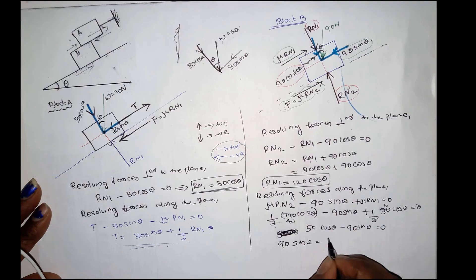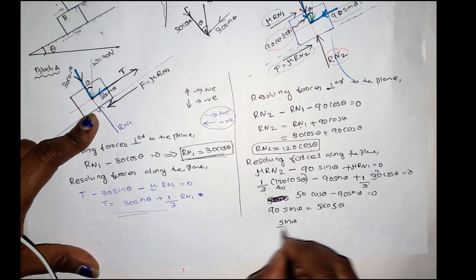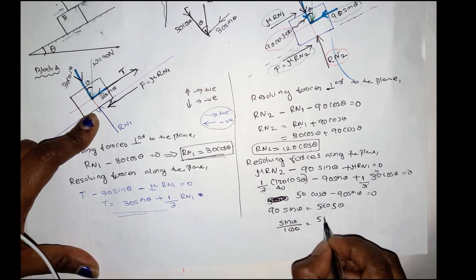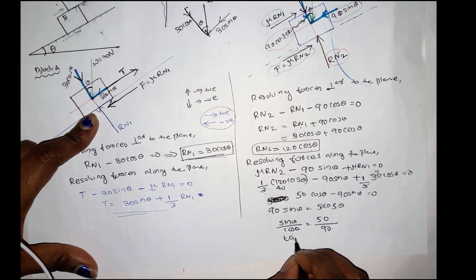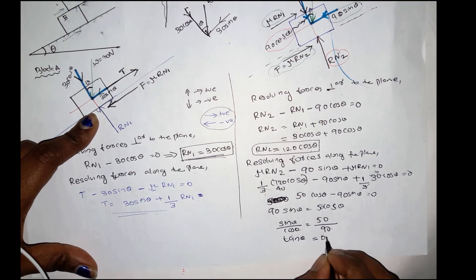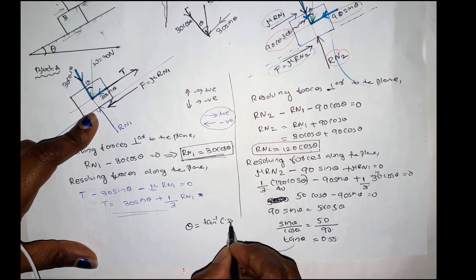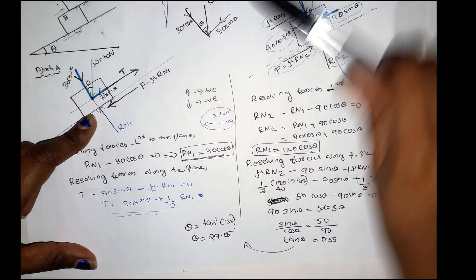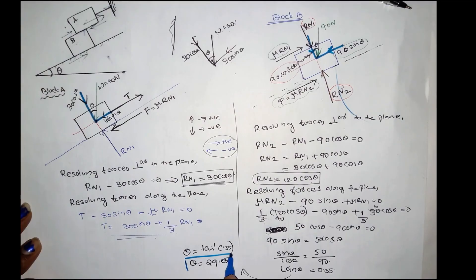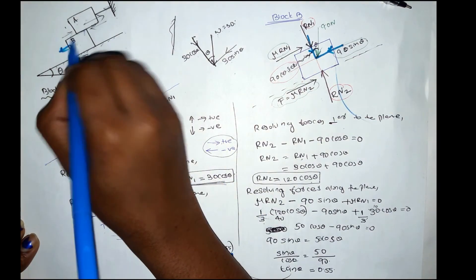Simplifying: 90 sin theta equals 50 cos theta. Therefore, sin theta divided by cos theta equals 50 divided by 90, which gives tan theta equals 0.555. Therefore theta equals tan inverse of 0.55, which equals 29.05 degrees. So the angle theta is equal to 29.05 degrees.